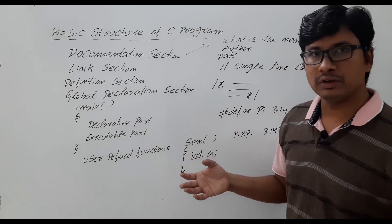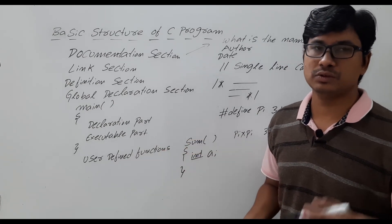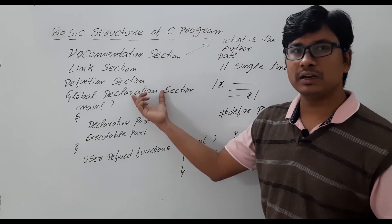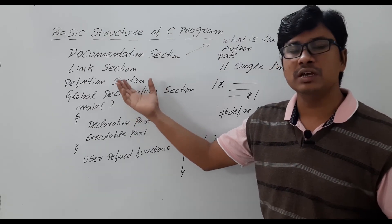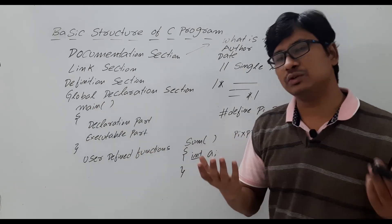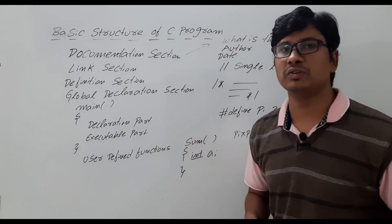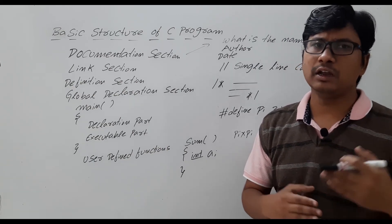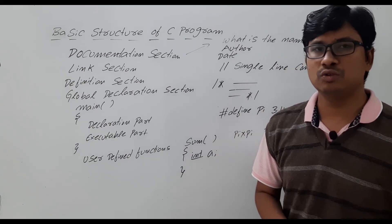If I declare it as a global variable, then the main function can use it and all the user-defined functions can also use it — like the TV in your home that everyone can use. The global declaration means whatever variables you have declared as global variables, those variables can be used in the entire program — inside the main function and inside all user-defined functions. That is the basic difference between local and global variables. Detailed discussion on auto, external, and static variables will come when we discuss the scope of variables.